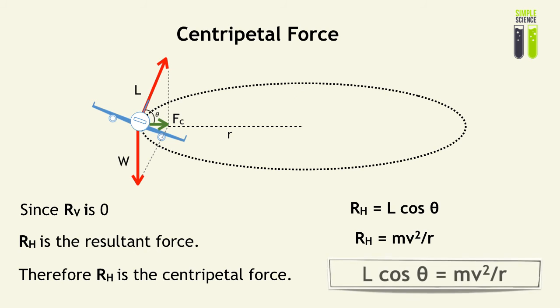And therefore, we can combine those two equations to give us a ratio that we can use to compare the variables, as L cos theta is equal to mv squared over r.